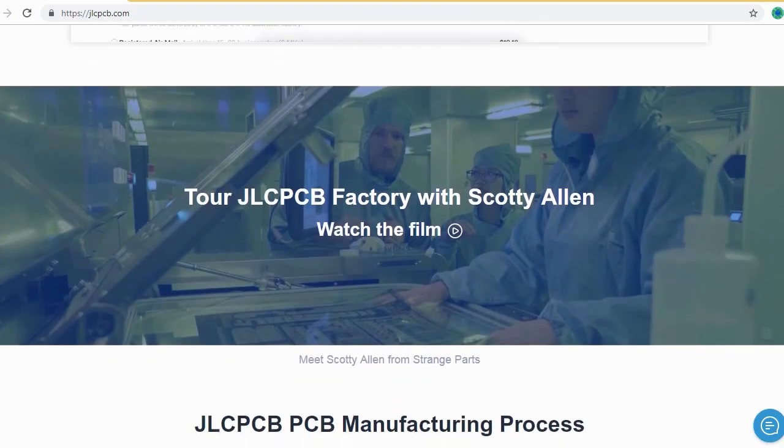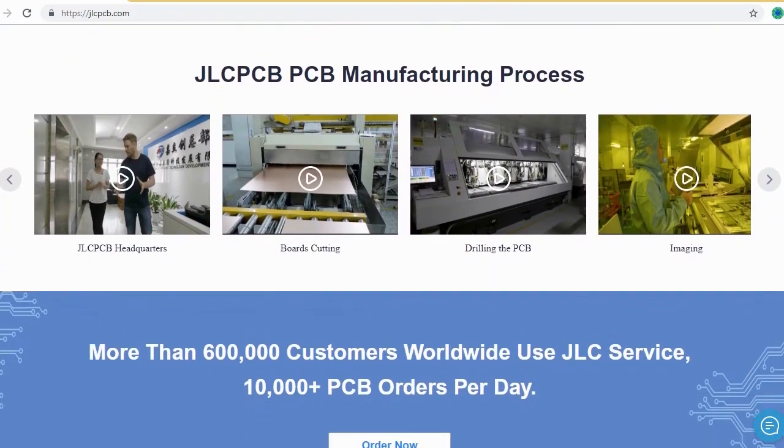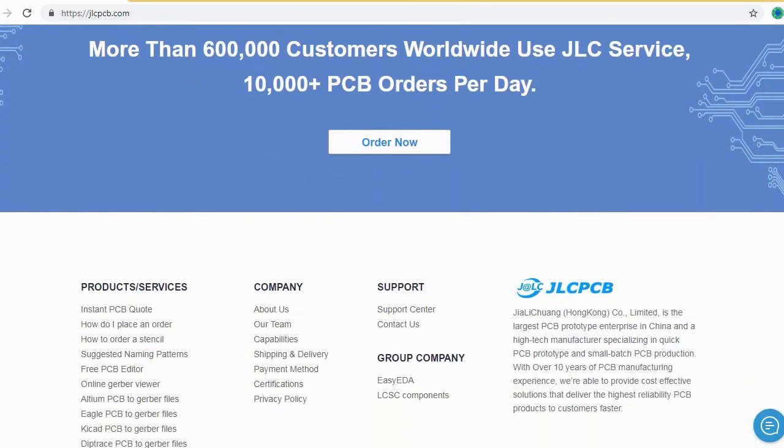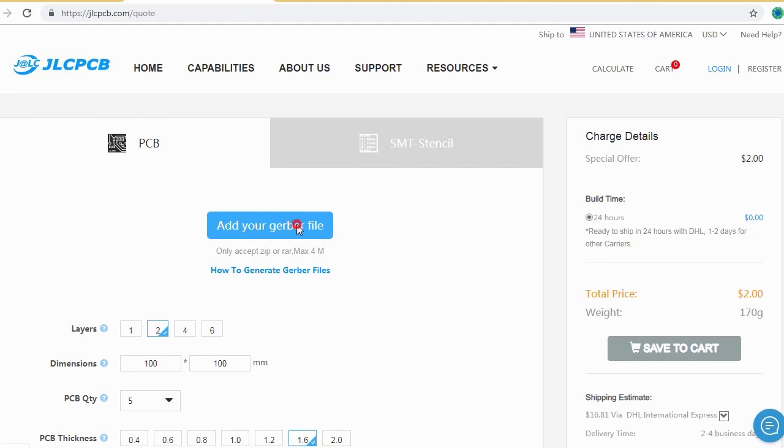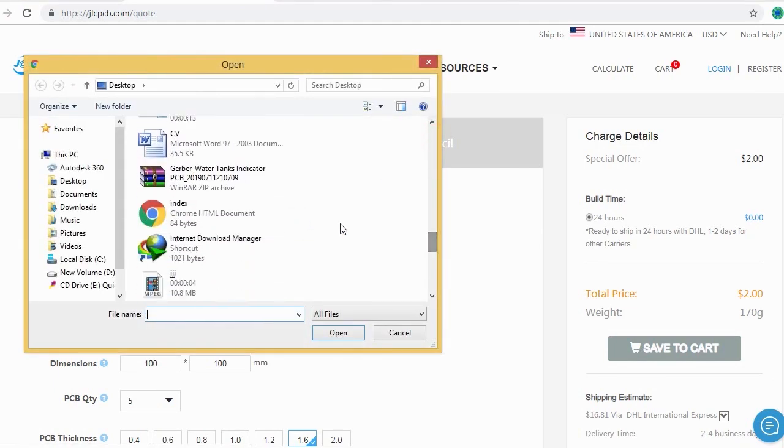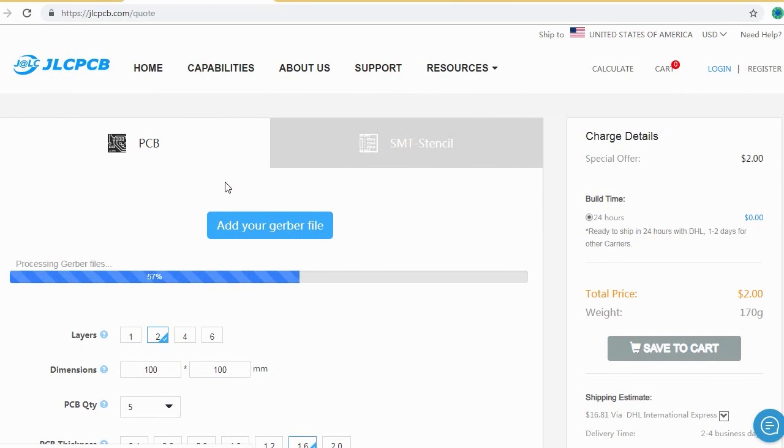Ordering PCB with JLCPCB is very easy and simple. You should just create your Gerber file and upload to JLCPCB. Here you can order your high quality PCB at a very cheap price.